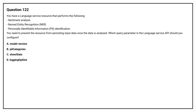Question number 122. You have a language service resource that performs the following: Sentiment Analysis, Named Entity Recognition (NER), and Personally Identifiable Information (PII) Identification. You need to prevent the resource from persisting input data once the data is analyzed. Which query parameter in the language service API should you configure?